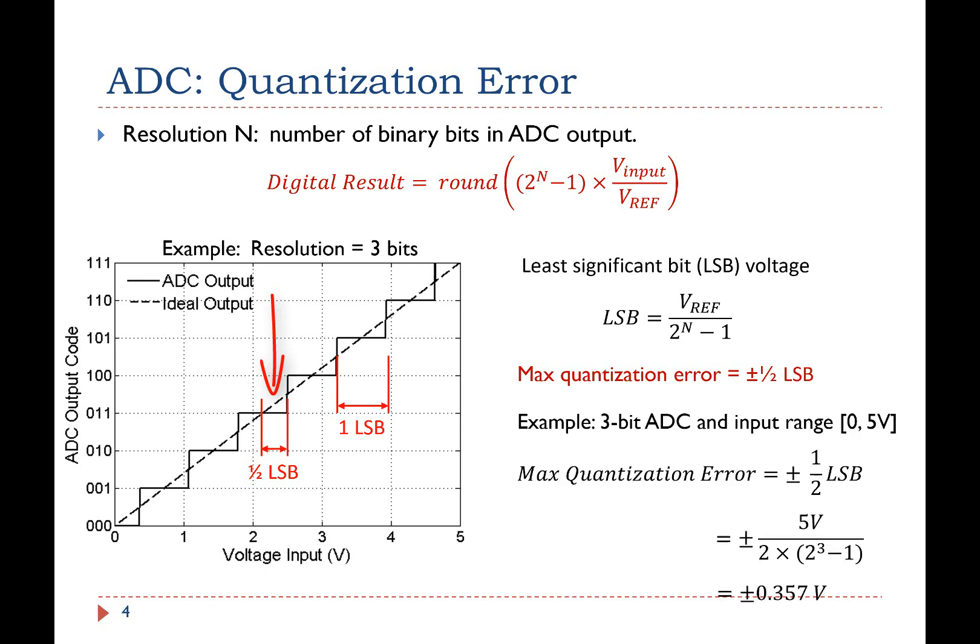For example, if the reference voltage is 5V, the maximum quantization error for a 3-bit ADC is 0.357V.